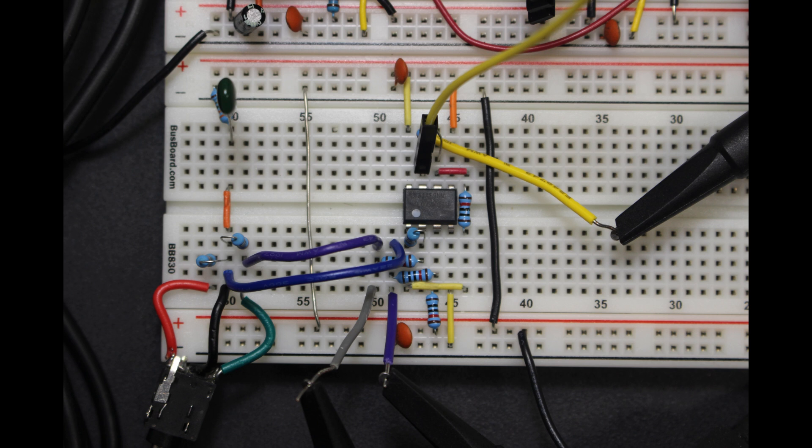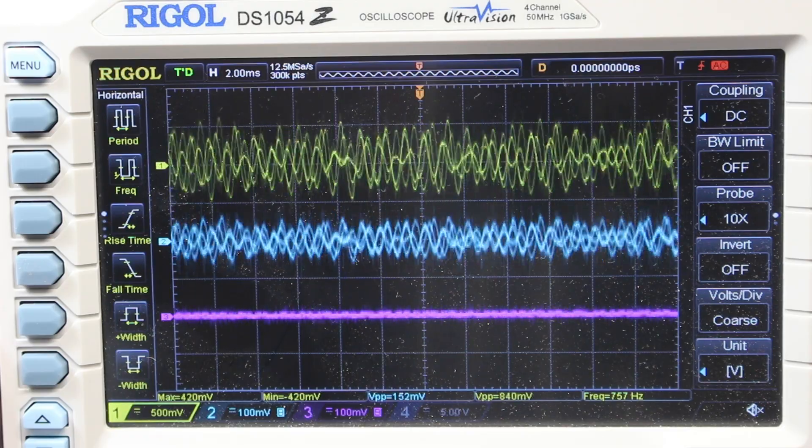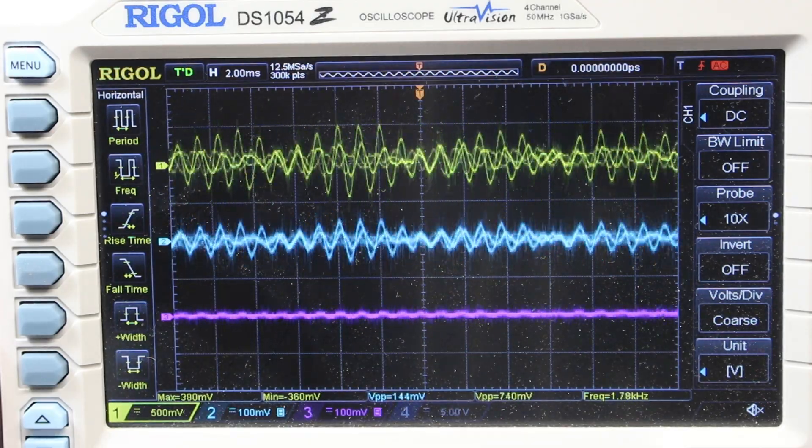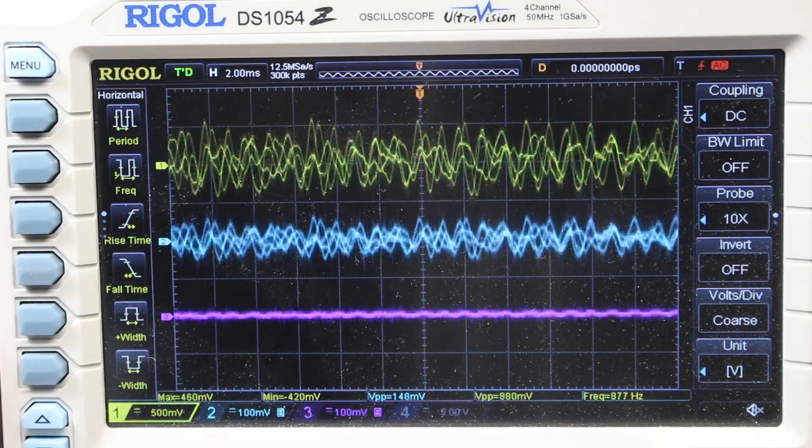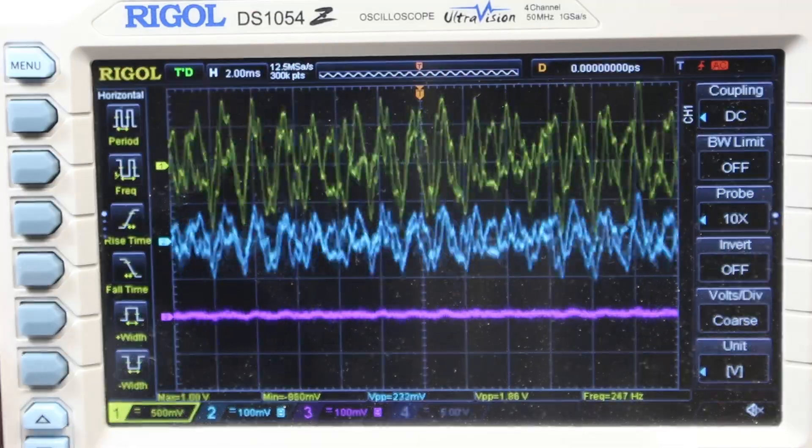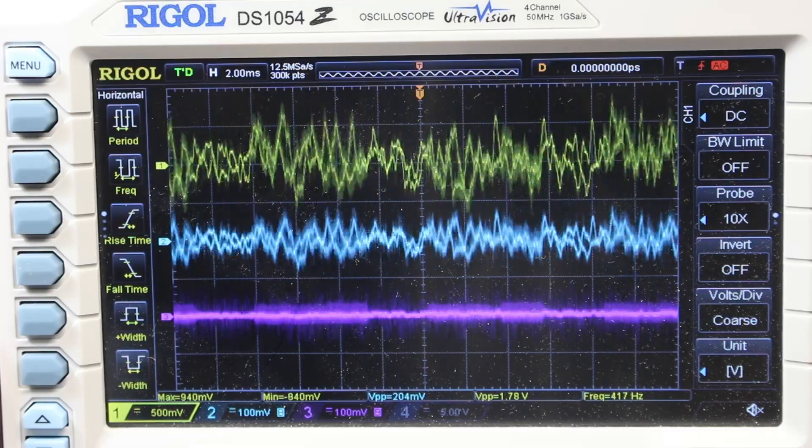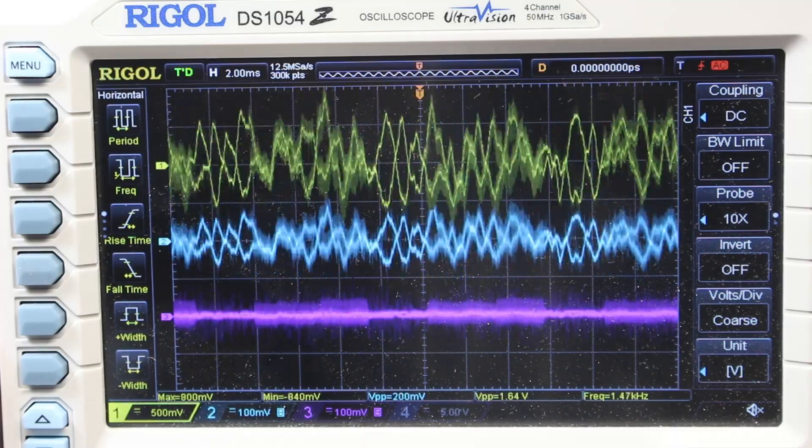Here's that single-ended configuration on the breadboard. Let's start the music player, listen to it on the speaker, and see it on the scope. As I said, the configuration is a little bit more forgiving. But when I plug in the charger, the 60 Hz buzz is still there, even though it's no longer drowning out the music.